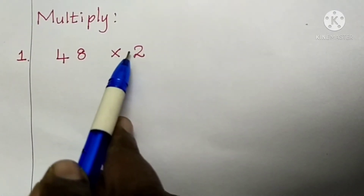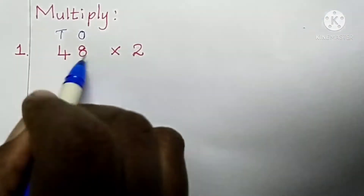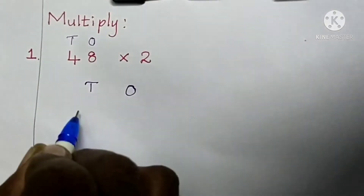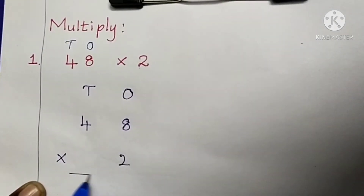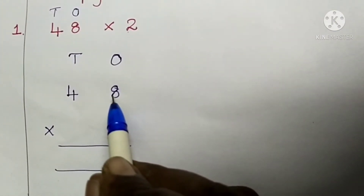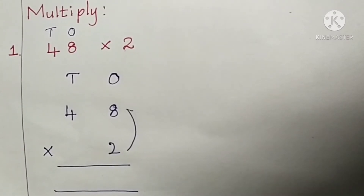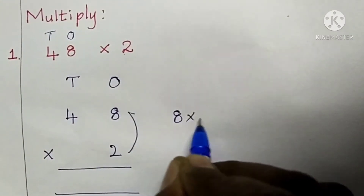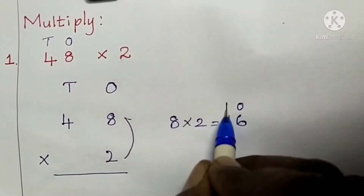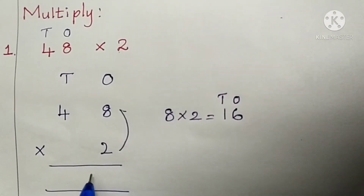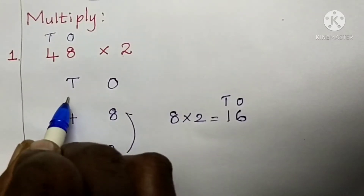Multiply forty-eight by two. First, put the place value for the given number — ones, tens. Arrange the number: four tens, eight ones, multiplied by two. Multiply the numbers at the ones place: eight multiplied by two — eight twos are sixteen. Sixteen is a two-digit number, so write six under the ones place and carry one ten to the tens place.